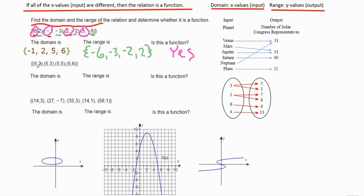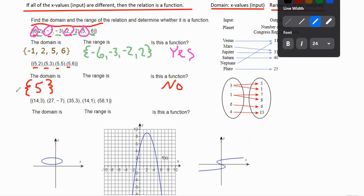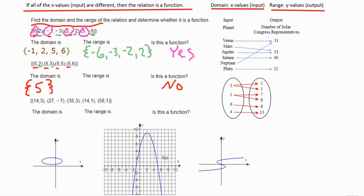For the next one, the domain, we have 5, 5, 5, and 5. So the x values are repeating. So no, it's not a function. And the only thing we say in the domain is that it is 5. We don't list them out multiple times. That's the domain. The range are the y values, and that would be 2, 3, 5, and 6.